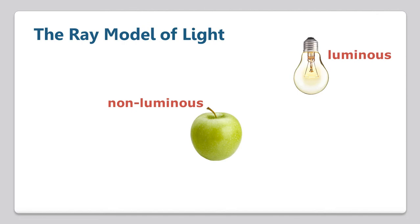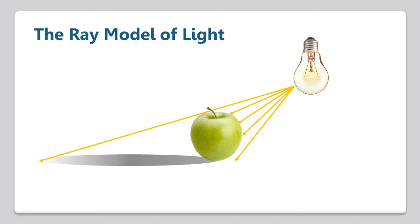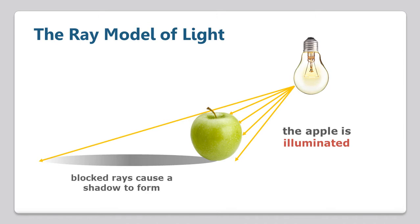We can only see the apple when a light source is present. With the light to the right of the apple, we would expect to see a shadow on the ground to the left. Our light bulb emits light in all directions and some will be in the direction of the apple. We only need to draw a few rays to show what happens when light strikes the apple. The rays that hit the surface of the apple allow us to see it — the apple is illuminated. Notice how a few of the rays hit the surface of the apple and stop. The apple blocks the rays and the shadow results because the light does not bend around the apple. This is the basis for the ray model of light: light travels in straight paths.